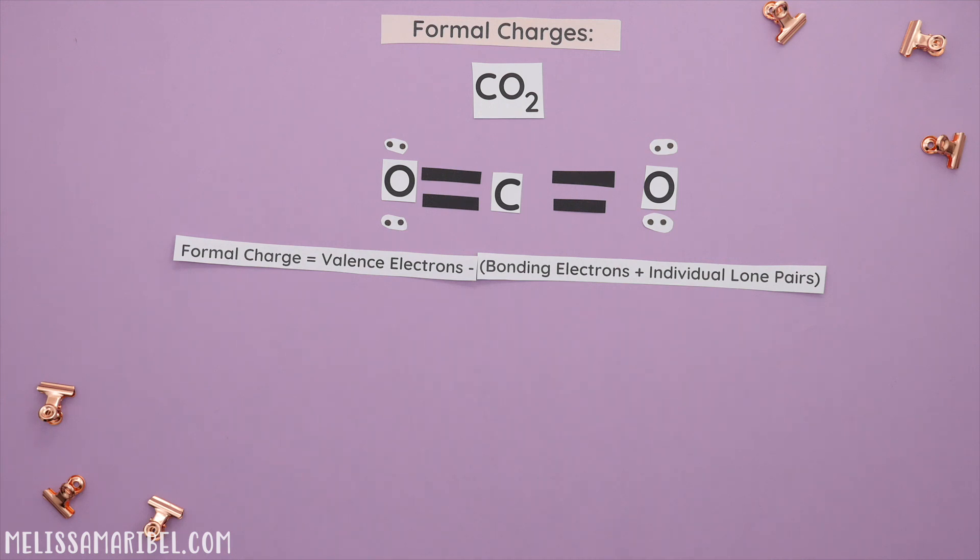Let's find carbon's formal charge. Carbon has four valence electrons. The electrons directly touching carbon are one, two, three, and four. And there are no individual lone pairs. So four minus four gives us zero. A neutral molecule prefers to have all formal charges be zero if it's possible for the structure.